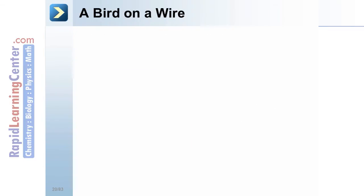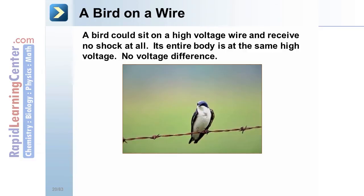A bird on a wire. You've probably noticed how a bird can sit on a high voltage wire, possibly at thousands of volts, and receive no shock at all. Its entire body is at the same high voltage. There is no voltage difference, so no current flows.